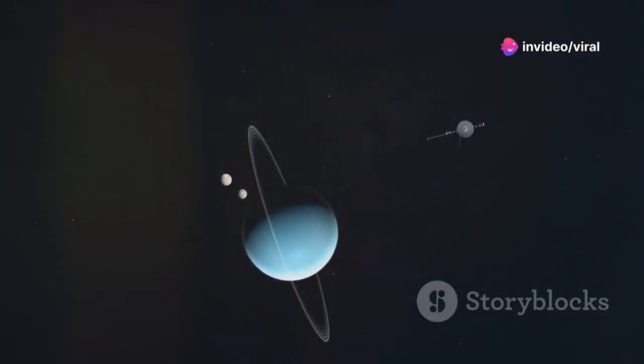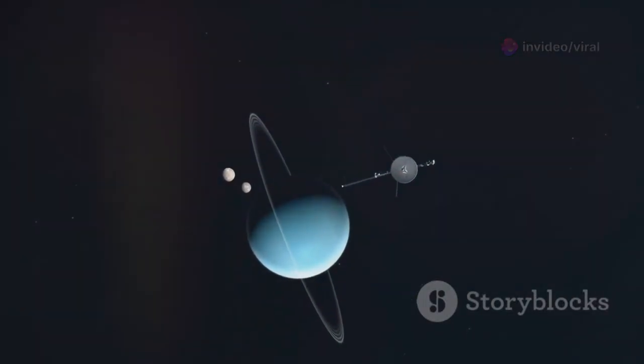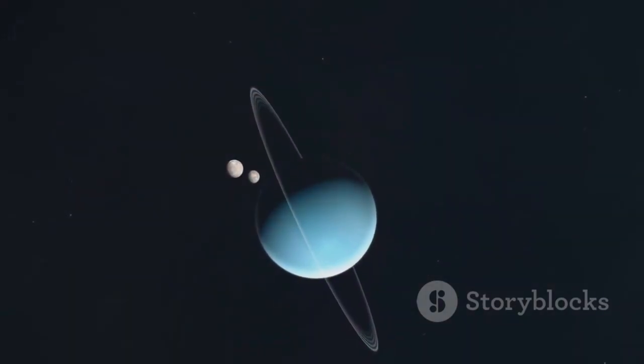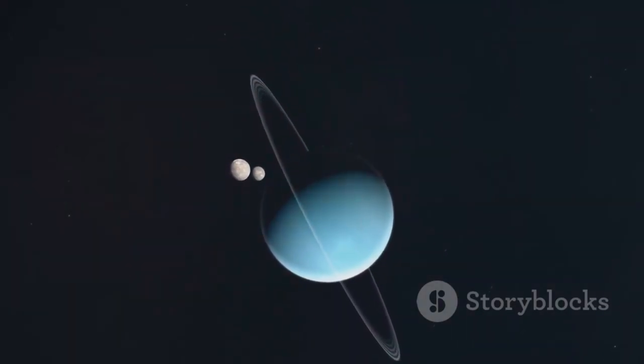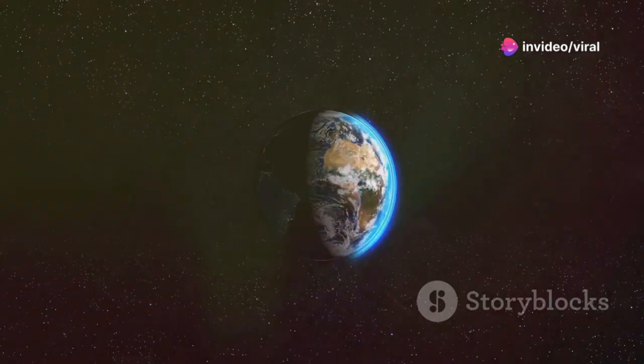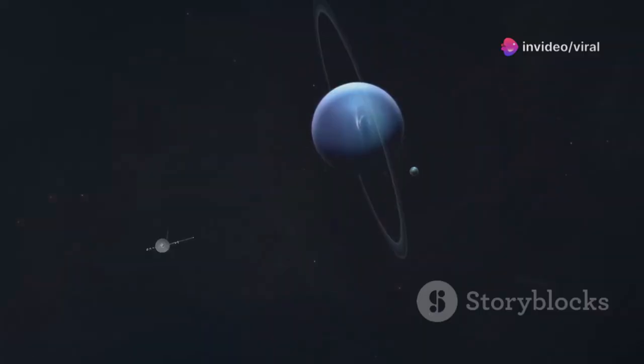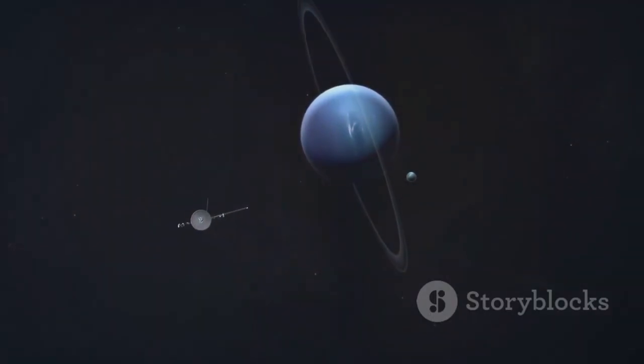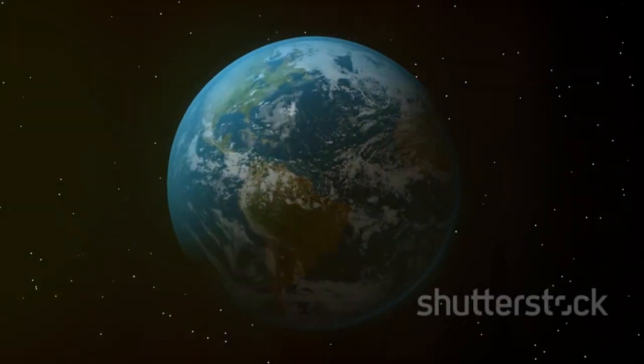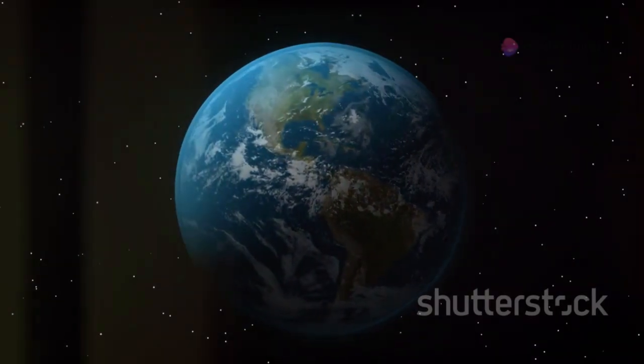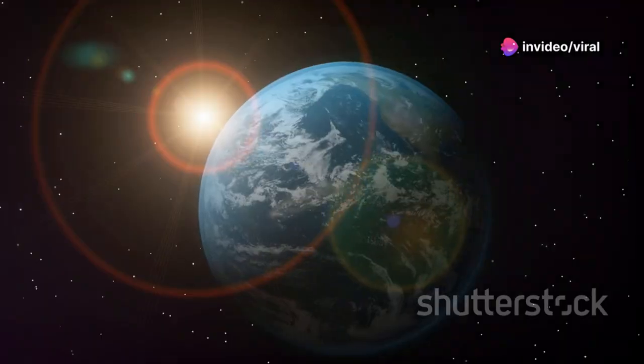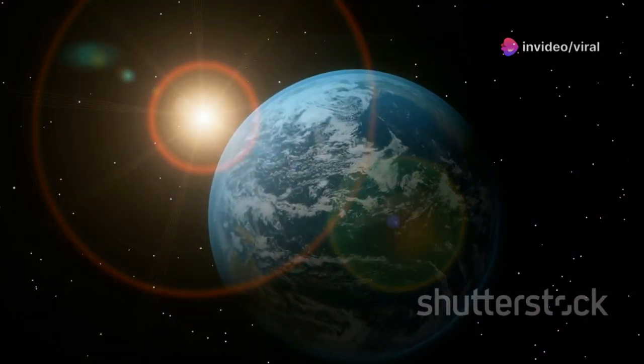Instead, Voyager 1 continued onward, venturing into the vast uncharted regions beyond the known planets. Its mission was evolving, and its story was far from over. Voyager 1 would eventually become the first human-made object to cross into interstellar space, breaking through the boundary of our solar system and carrying humanity's message to the stars. The discoveries made by Voyager 1 transformed our view of the outer planets and their moons, revealing a solar system far more dynamic and complex than anyone had imagined.